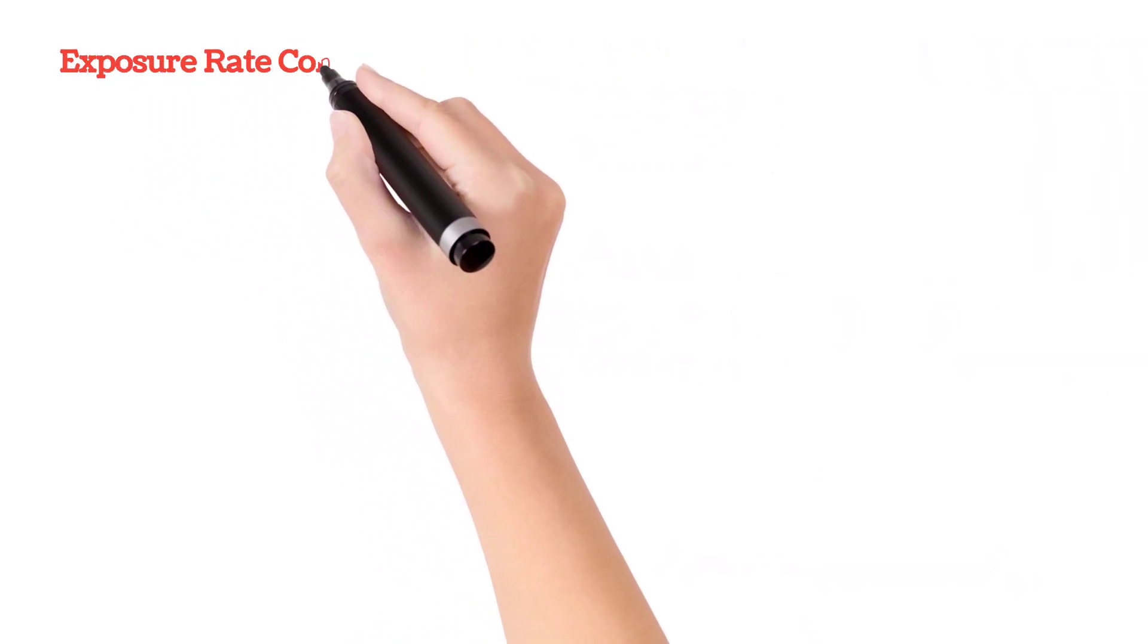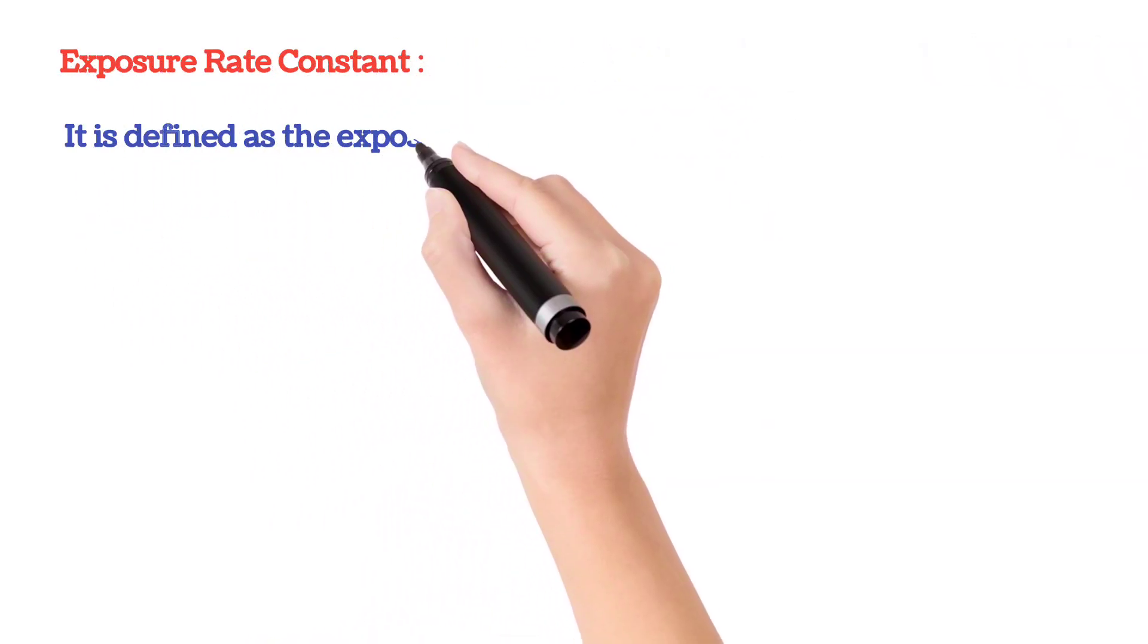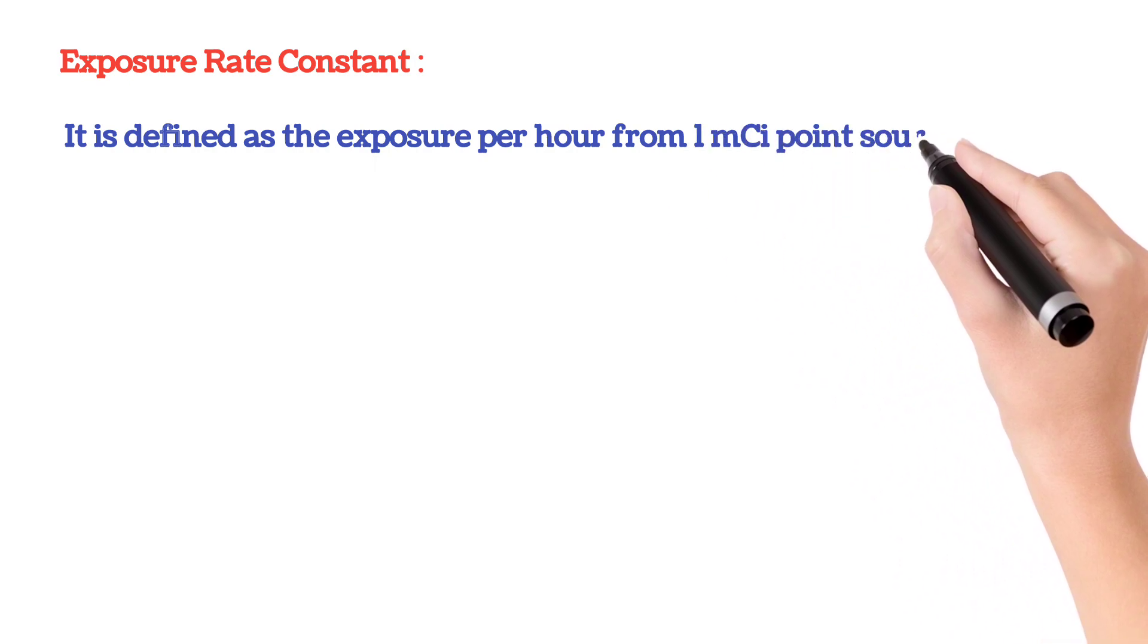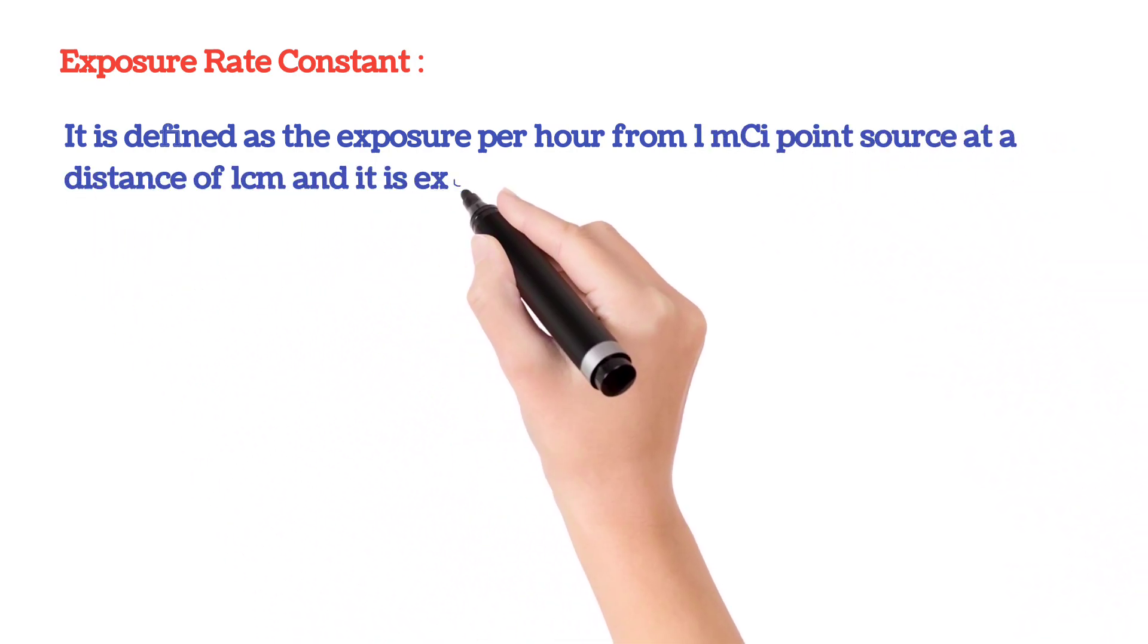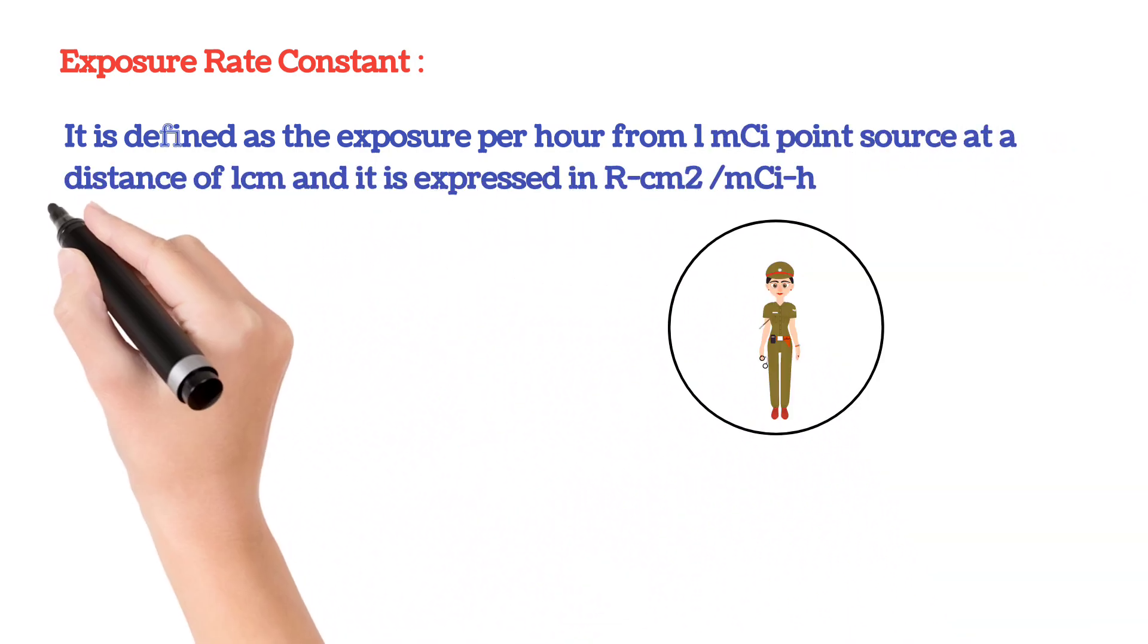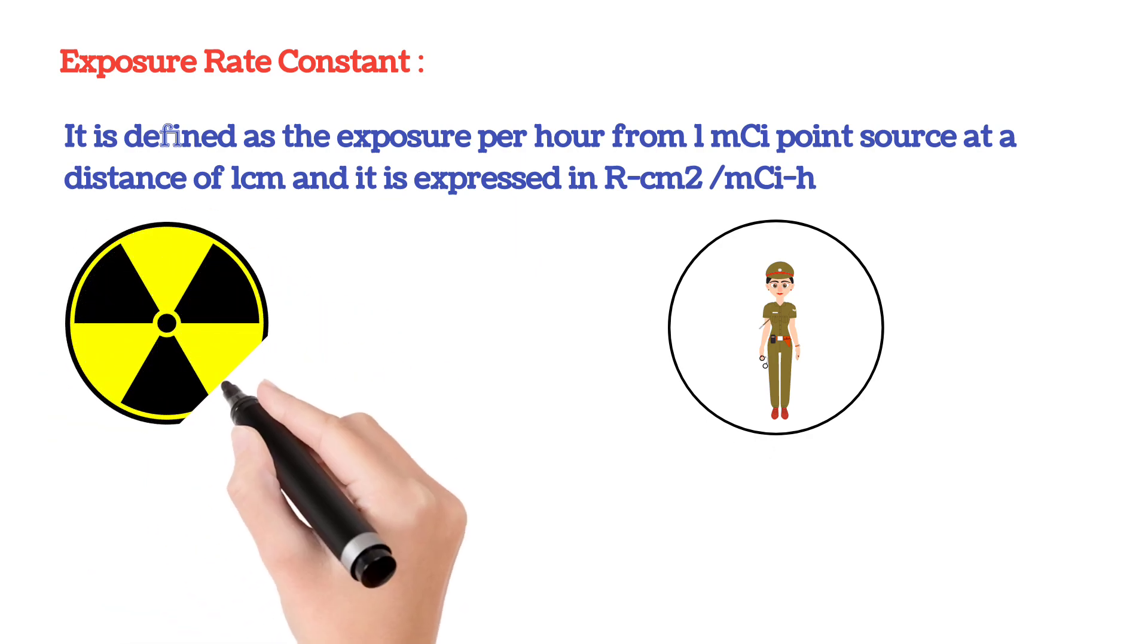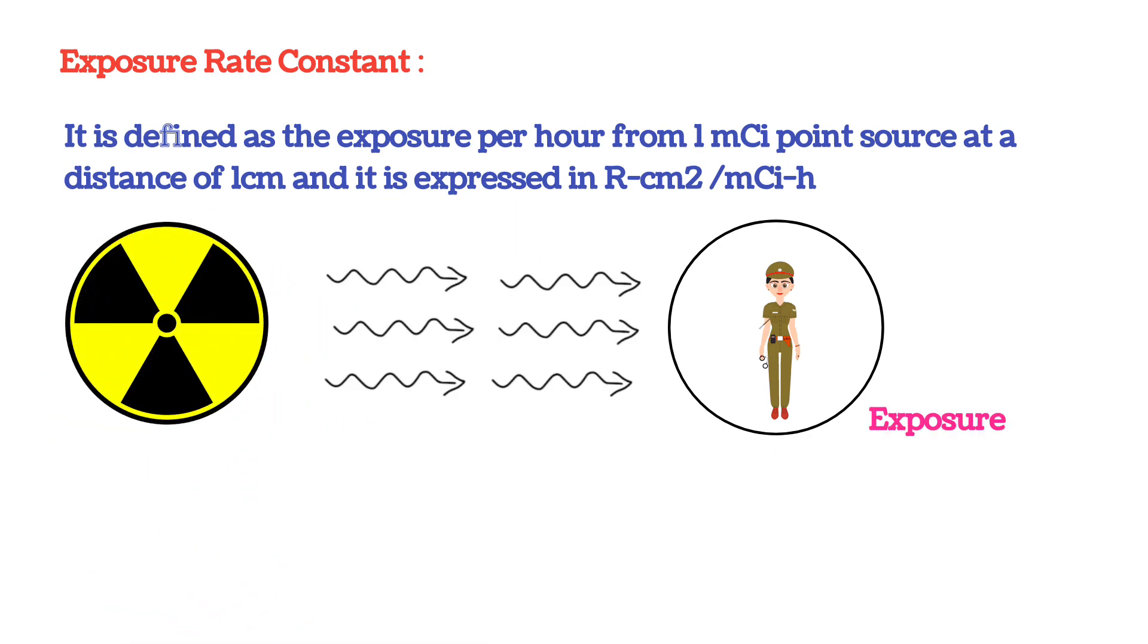The exposure rate constant is defined as the exposure per hour from 1 millicurie point source at a distance of 1 centimeter. In other words, it's the amount of ionizing radiation per hour, the radiation level at 1 centimeter distance from the 1 millicurie point source.